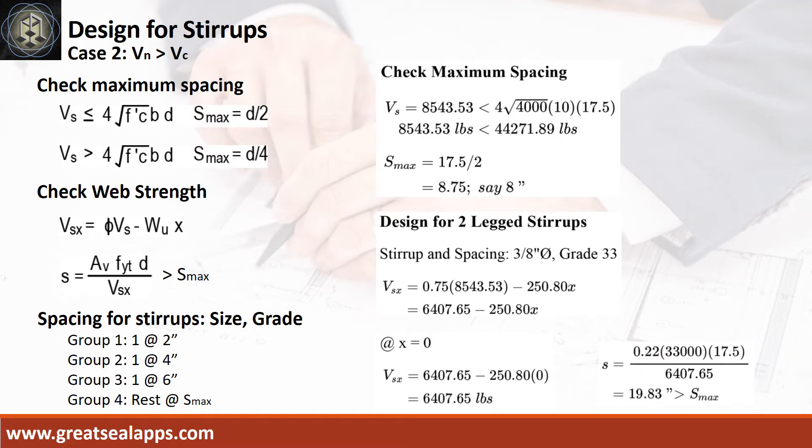Maximum spacing is 8 inches. The shear force at face of support is 6,407.65 pounds, and initial spacing at 19.83 inches. The stirrup spacing are as follows: